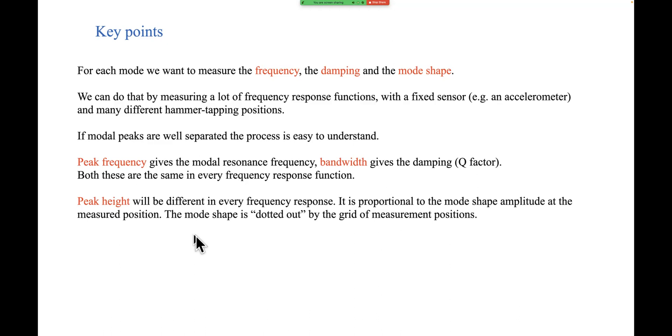Now the peak height is the thing that will be different in every frequency response. Theory tells us that it's proportional to the mode shape amplitude at the particular position where you tapped with your hammer, so you can dot out the mode shape by the grid of your measurement points. And then the warning: I've simplified things. The actual software that George has written for doing this has to allow for things being more complicated, and the main complication is that I've explained all of this in terms of the frequency response of a single mode, but of course we're measuring a violin body or a cello body which has lots of modes. The peaks aren't always well separated. Sometimes they get close enough together that the response at a single frequency has contributions from more than one mode, and you have to take account of that by doing something clever in the software.